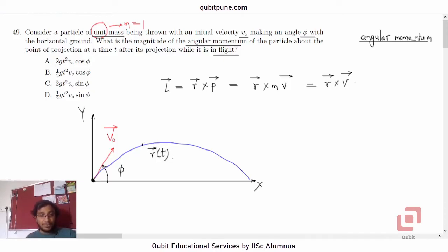Suppose our particle is at this location at time t. How are we going to show the position vector? The position vector will be this one. Let me show it in pink color. This is R bar.